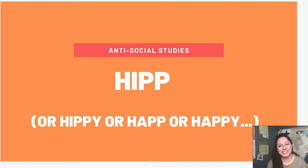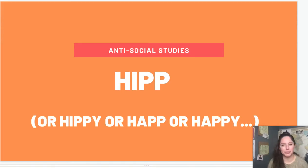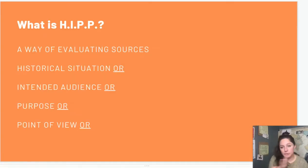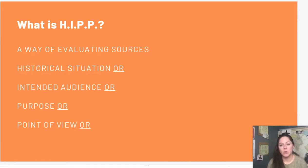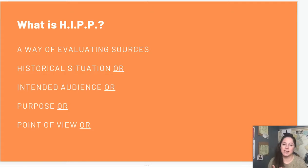Welcome back to Antisocial Studies Teachers. Today we're going to talk about HIP — or Hippie or Hippo or Hap or Happy or AP Parts — whatever acronym you use to teach this thing. I use HIP just because it goes exactly with the way the College Board phrases it on the rubric for the DBQ. HIP is essentially a way of evaluating sources or documents, and it stands for Historical situation, Intended audience, Purpose, or Point of view.